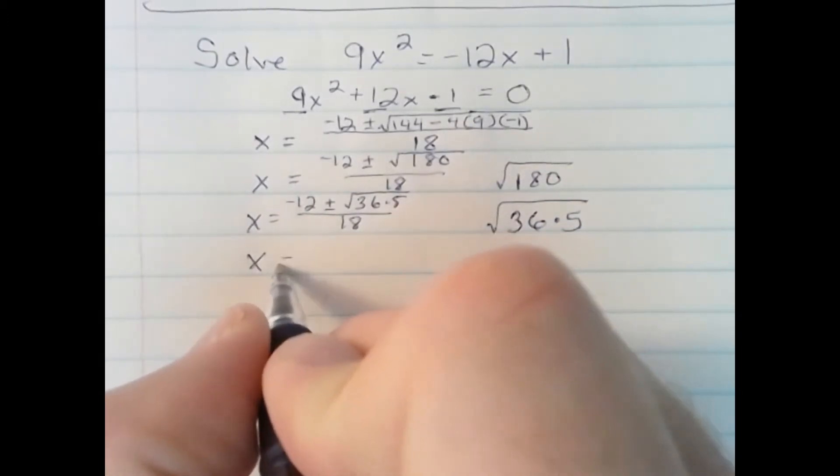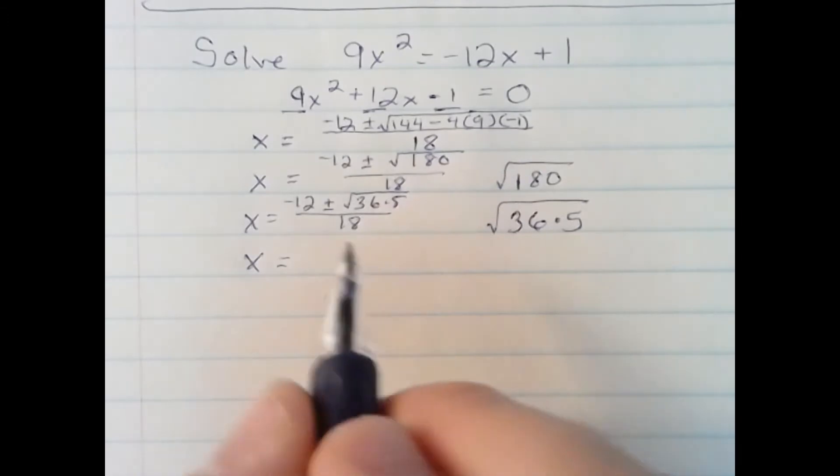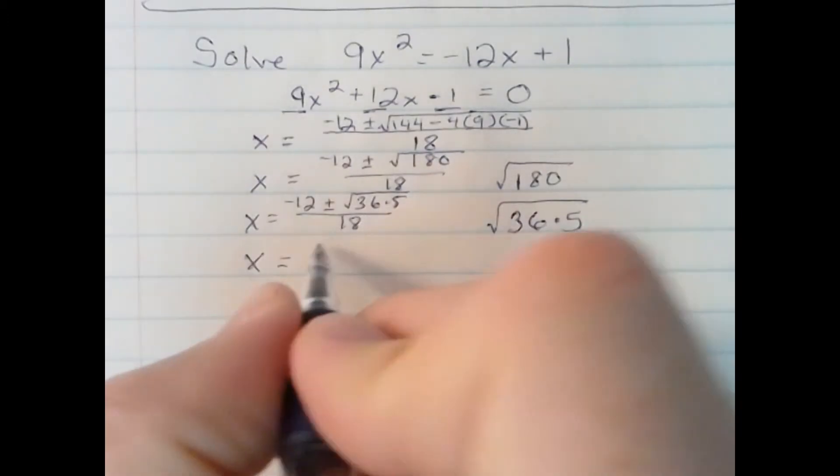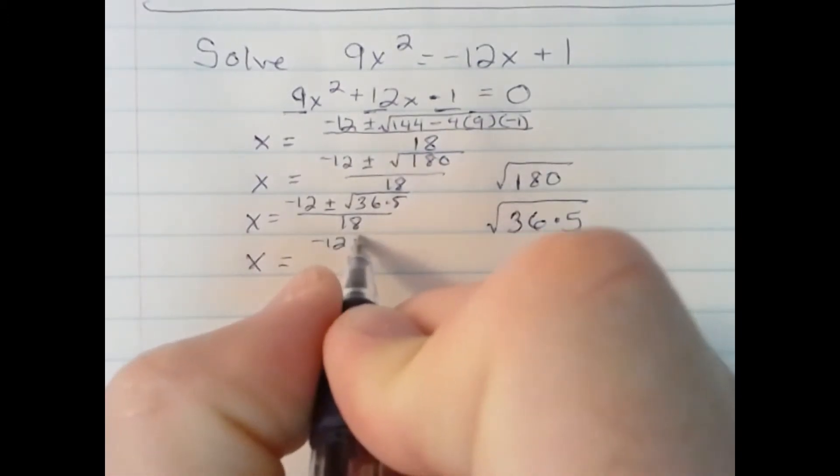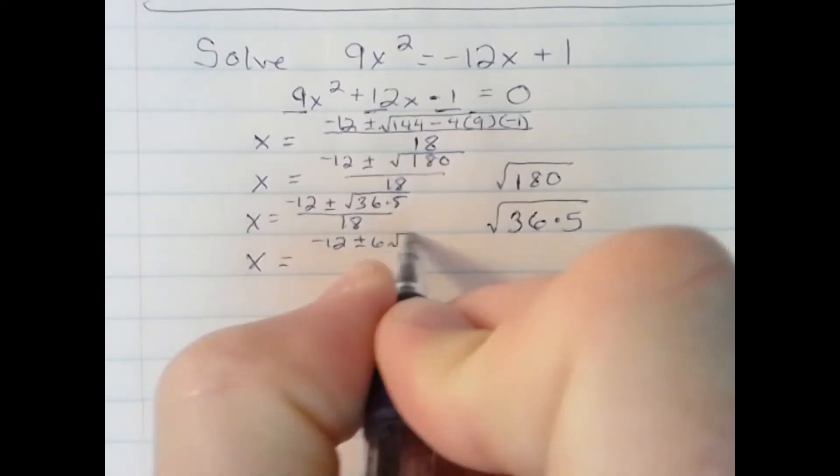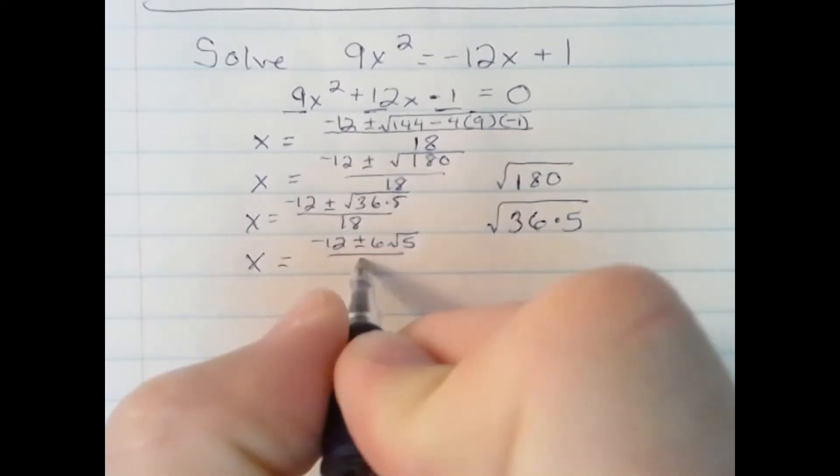Now, let's go ahead and simplify. The square root of 36 is 6. So I will write this as negative 12 plus or minus 6 radical 5, still over 18.